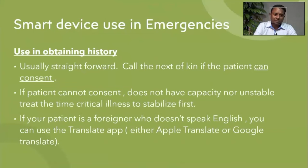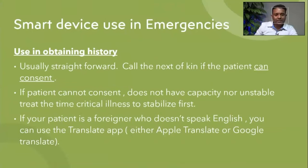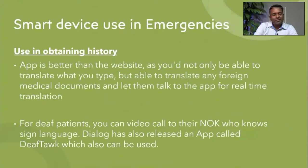Always remember that you need to establish the patient's identity first before you get the history. When you get people from India or the Middle East who speak Hindi, Arabic, or Chinese, you can use the Translate app — there's one for Apple and one for Google. You can use this app to get near-perfect translation of medical documentation and also talk to patients in real time. It's best to download the app rather than use a browser, as it enables real-time two-way translation — you speak into the app, it translates, and plays it back to the patient.